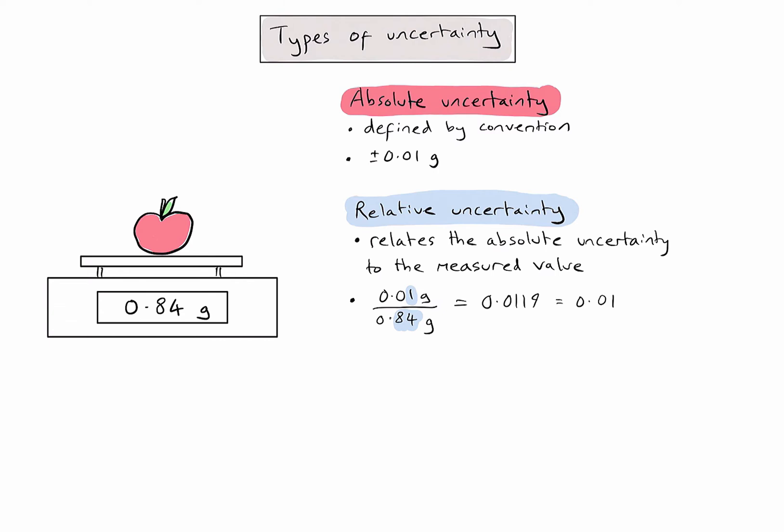Notice also that there are no units in a relative uncertainty, because I've taken a value in units of grams divided by another value in units of grams, so those units cancel out.